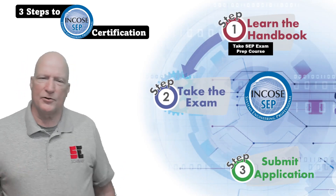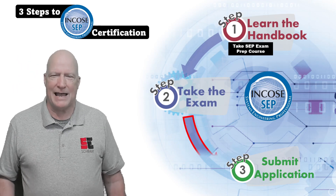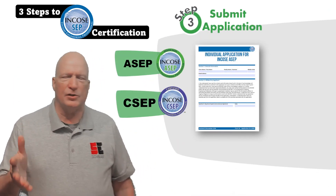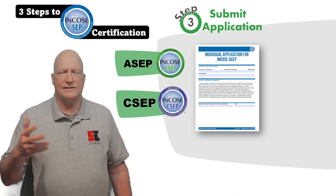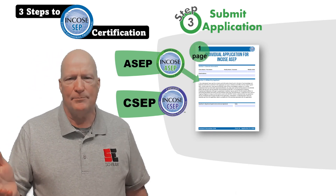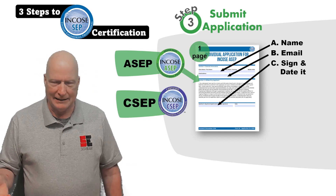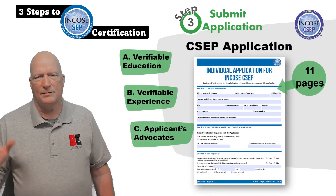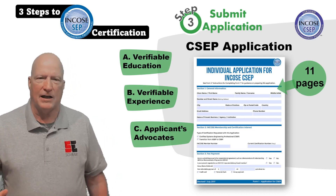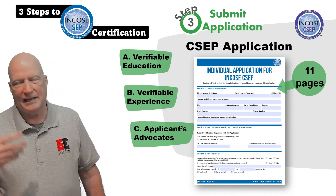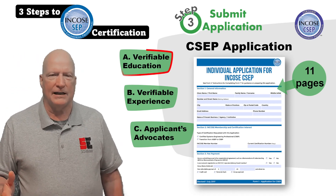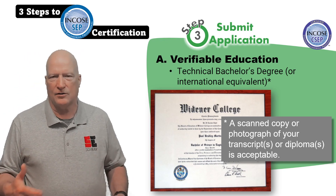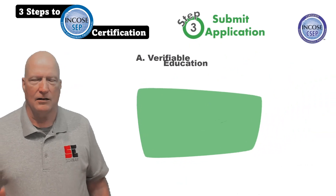You've learned the handbook and through my course you've passed the exam. But you still need to submit an application to ENCOSI so they can give you that certification. There are two types of forms. The first is the ASEP — it's one page; you fill out your name, email, sign it, and date it. The CSEP, though, is about 11 pages covering verification of your education, your experience, and your references. For education, you get your technical bachelor's degree or equivalent, scan a copy, and send that along with your application.